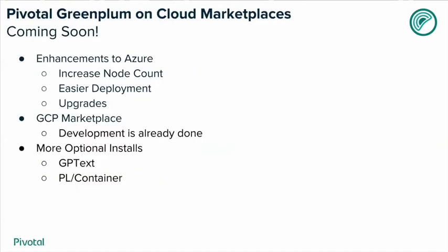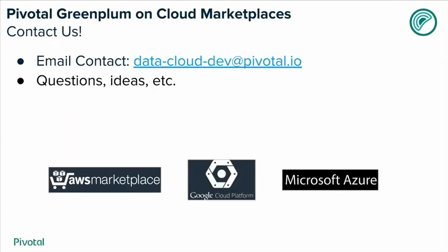What's coming to Pivotal Greenplum on the cloud marketplaces? We're actively working on improving Azure — increasing the number of nodes you can deploy and making deployment easier — and the GP upgrade utility will be coming to Azure in the very near future. GCP Marketplace development is already done; we're just waiting on some legal things to get ironed out, and then it'll be available. More optional installs are coming, including GP Text and PL Container. If you have any questions or ideas on new features for the cloud, let us know at dataclouddev@pivotal.io. Thank you.